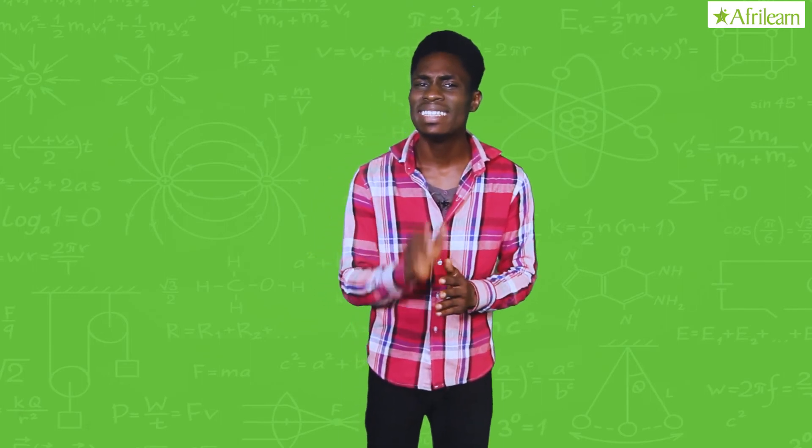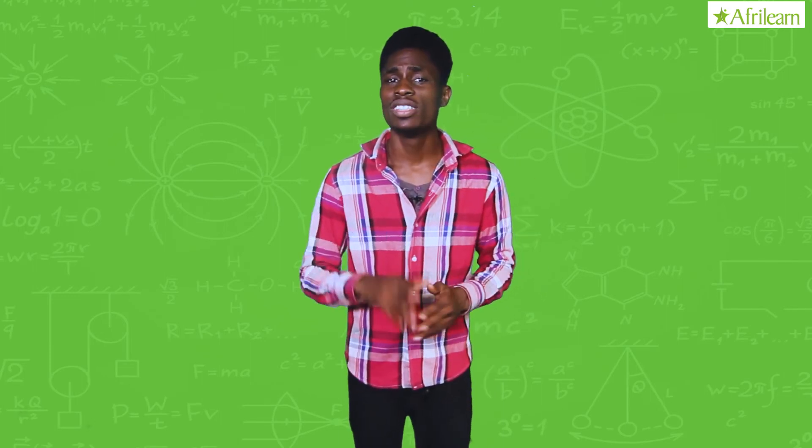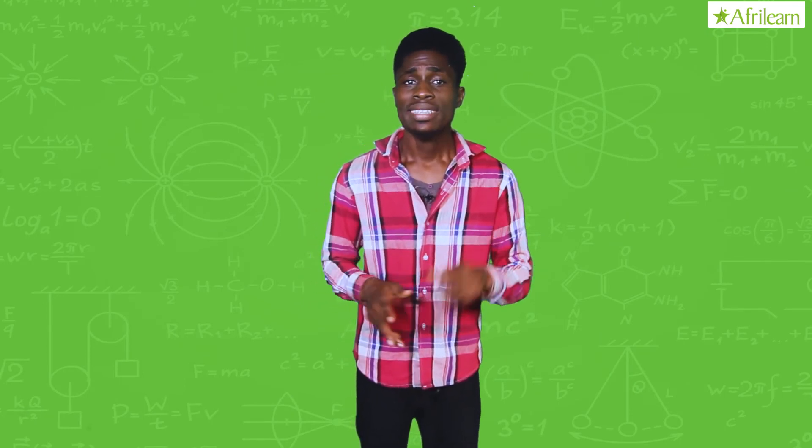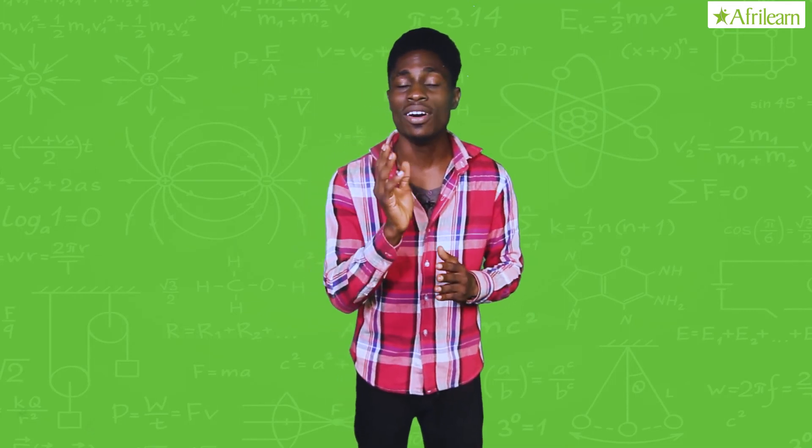Now, a common dry cell is the zinc-carbon cell, sometimes called the dry Leclanche cell, with a nominal voltage of 1.5 volts, the same as the alkaline cell, since both use the same zinc-manganese dioxide combination.